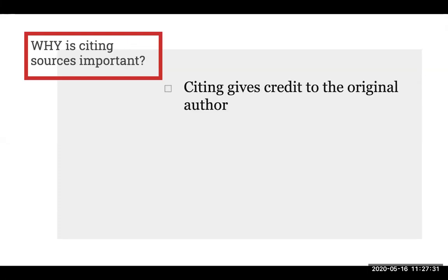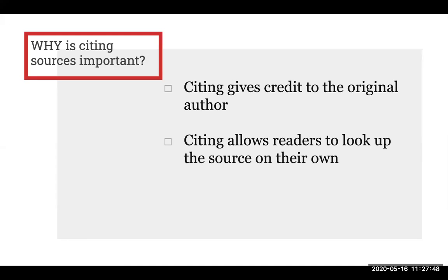Let's first take a look at why citing sources is important. One reason is that citations give credit to the original author. Doing so means you are attributing existing research to its creator. This helps in avoiding plagiarism, which is when you pass off a borrowed idea as one of your own. Another reason is that citations allow readers to look up the source on their own. If you write a research paper with citations provided, then someone else reading your paper has enough information to look up those resources on their own.